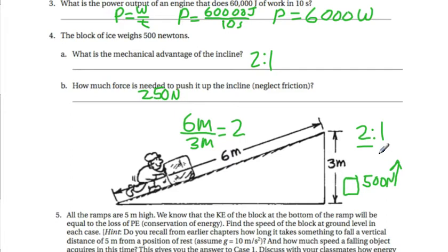You could also solve this problem by finding the potential energy up here, which is equal to mass times gravity times height, and then using the force distance equation and setting it equal to the potential energy. That would also be a valid solution.